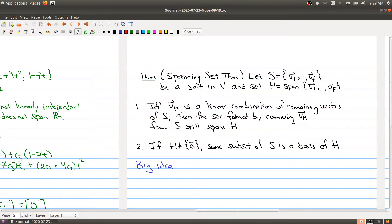What this is saying is, let's say there's some vector in your set S that's a linear combination of the remaining vectors. Then what you can do is pop that vector VK out. If you take that set formed by removing VK, then whatever is still left over will still span.